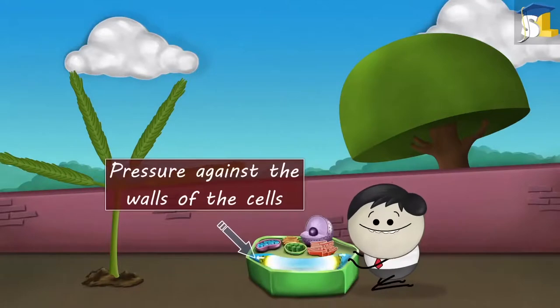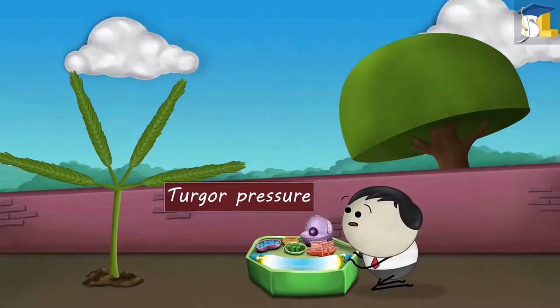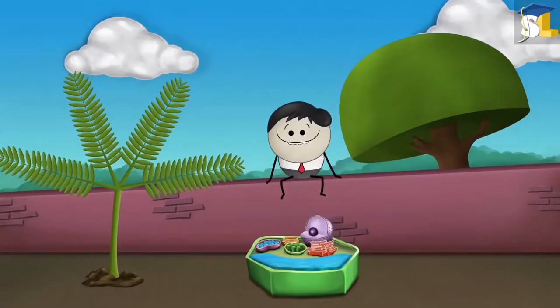This water applies pressure against the walls of the cells. This pressure is called turgor pressure. It helps the leaflets to stand upright.